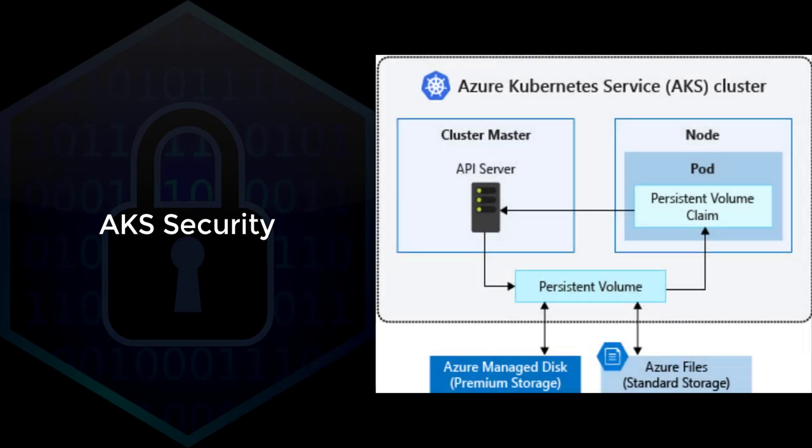There are two entities in Kubernetes that we are referring to. One is a master and the other is a node where your applications or containers are hosted. It's important to keep both of them secure because that is how you will protect your customers' data that is running the application workloads in the AKS clusters.